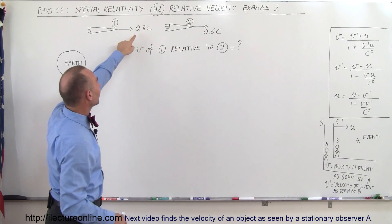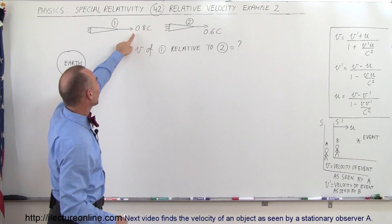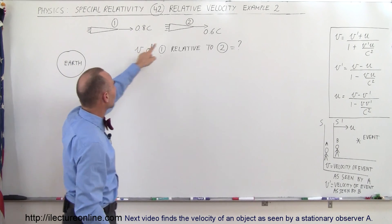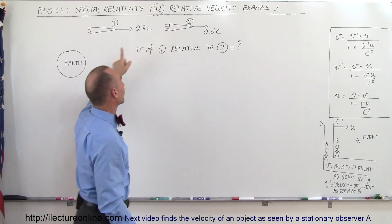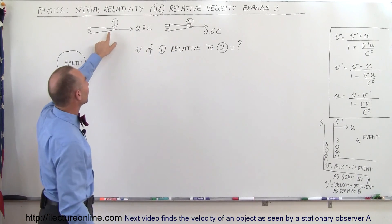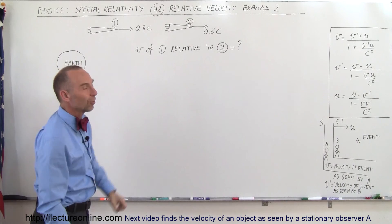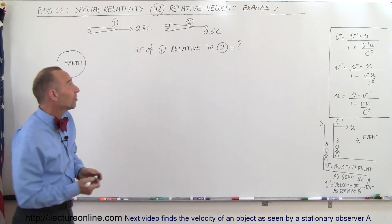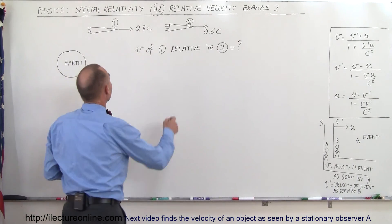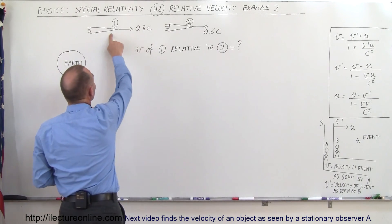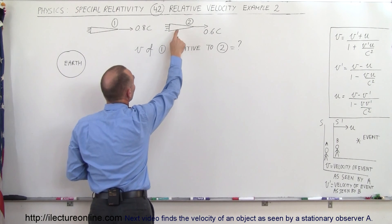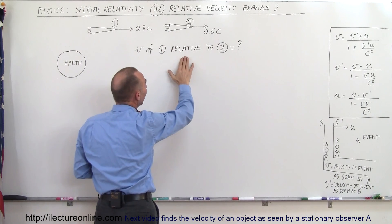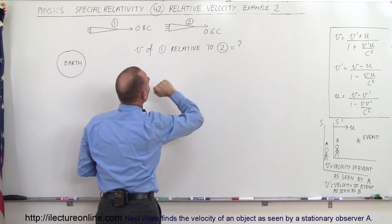Their speeds are relative to the Earth: 0.8c relative to the Earth and 0.6c relative to the Earth. So it does look like Spaceship 1 will be catching up to Spaceship 2. The question is: how fast is Spaceship 1 approaching Spaceship 2 as seen by Spaceship 2?